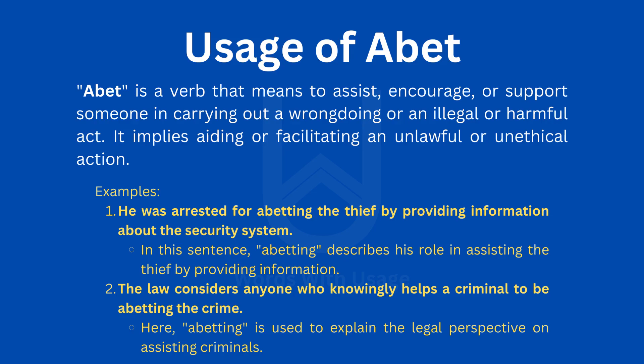Examples. 1. He was arrested for abetting the thief by providing information about the security system. In this sentence, abetting describes his role in assisting the thief by providing information. 2. The law considers anyone who knowingly helps a criminal to be abetting the crime. Here, abetting is used to explain the legal perspective on assisting criminals.